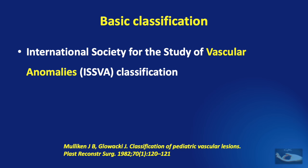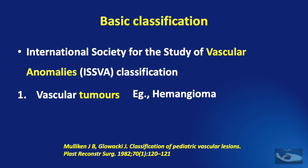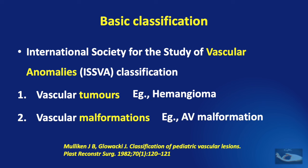The International Society for the Study of Vascular Anomalies classification says that all vascular anomalies can be classified either as vascular tumors, e.g. hemangioma, or vascular malformations, e.g. AV malformation.